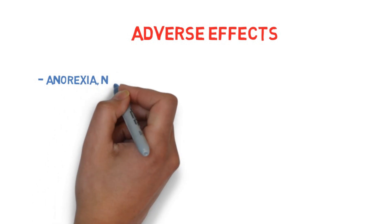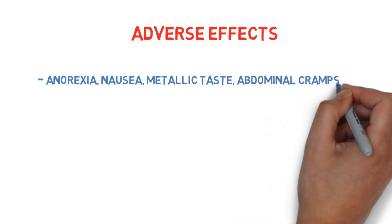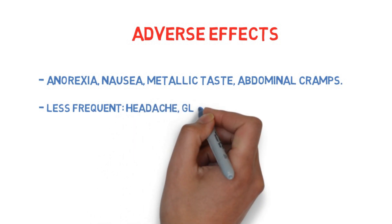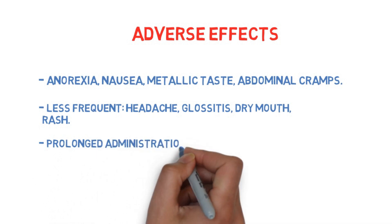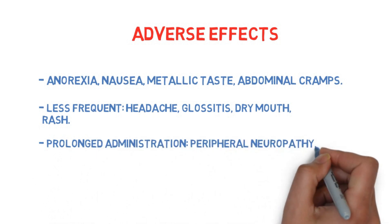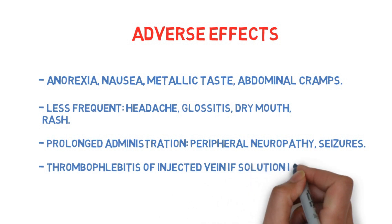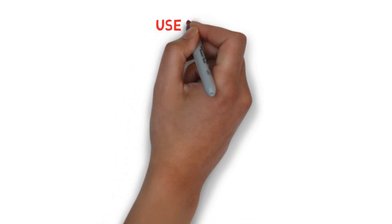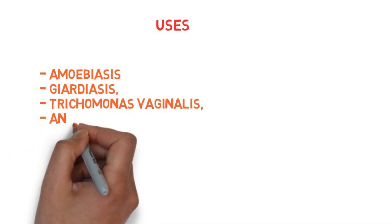Now let's talk about adverse effects. Number one: anorexia, nausea, metallic taste, and abdominal cramps. Less frequent adverse effects include headache, glossitis, dry mouth, and rash. Prolonged administration may lead to peripheral neuropathy and seizures. Another adverse effect is thrombophlebitis of the injected vein if the solution is not well diluted.